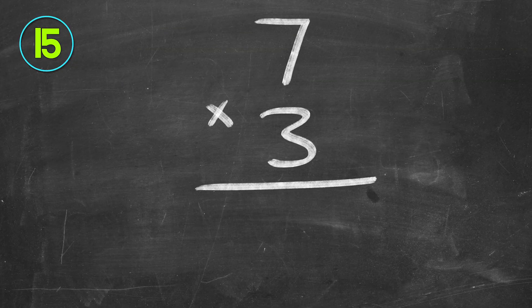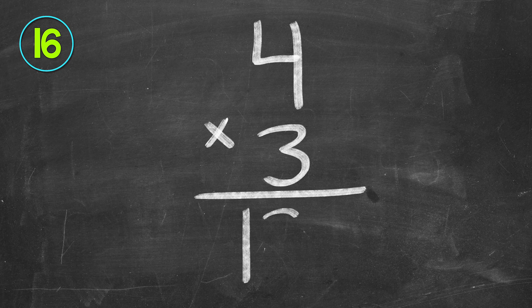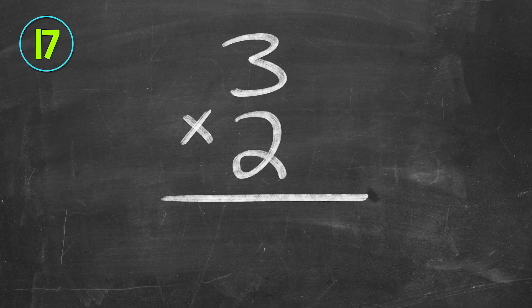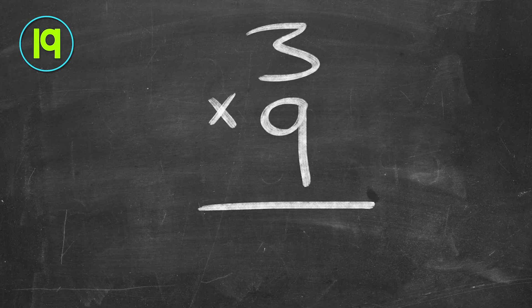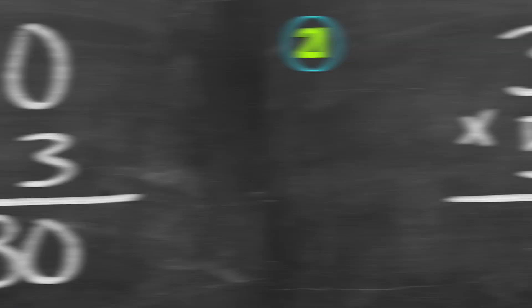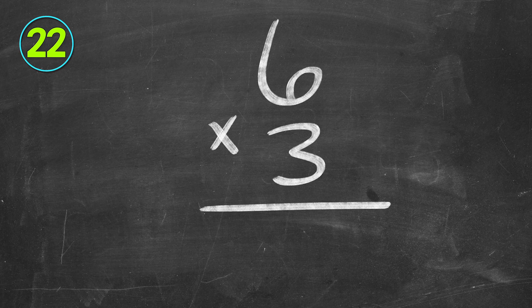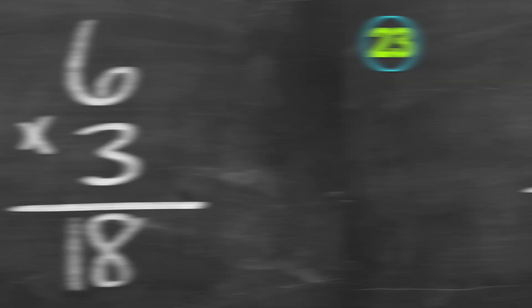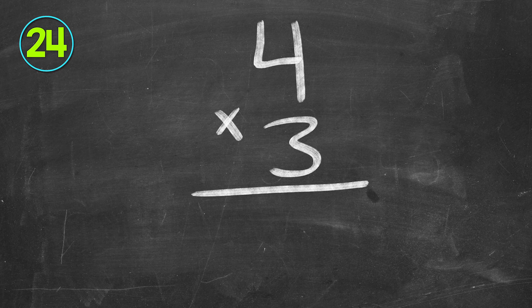Seven times three. Twenty-one. Four times three. Twelve. Three times two. Six. Three times three. Nine. Three times nine. Twenty-seven. Ten times three. Thirty.